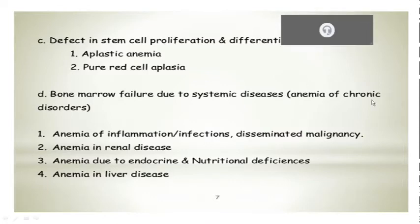Bone marrow failure due to systemic diseases like anemia of chronic infections or inflammations, or renal failure, or due to endocrinal and nutritional deficiency, anemia and liver diseases.